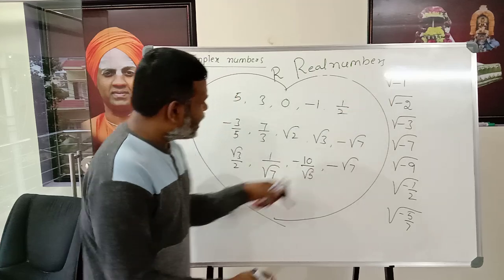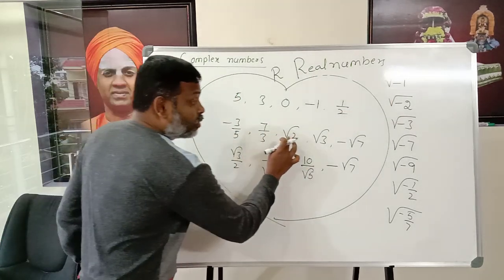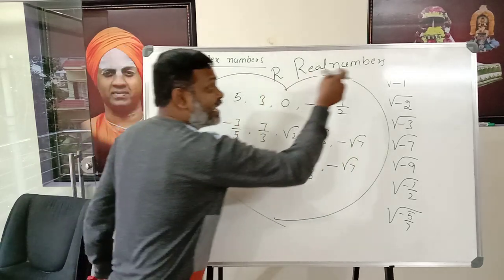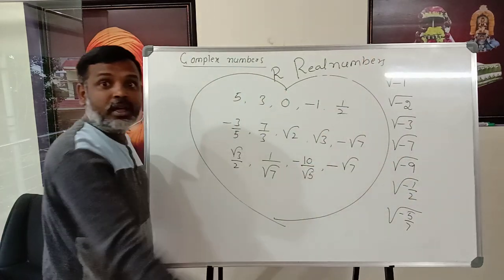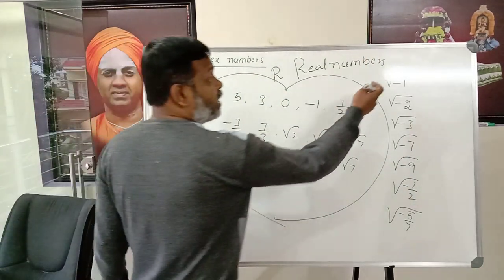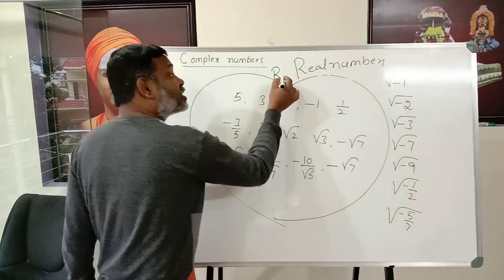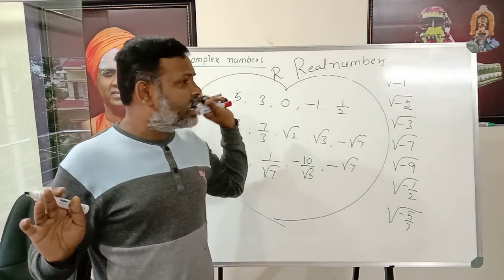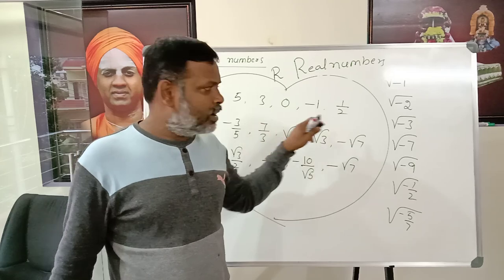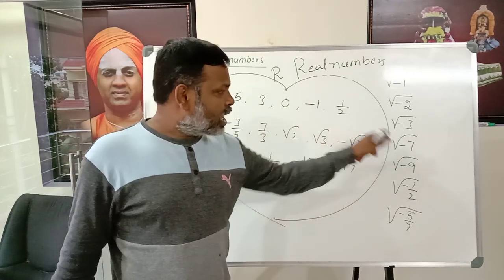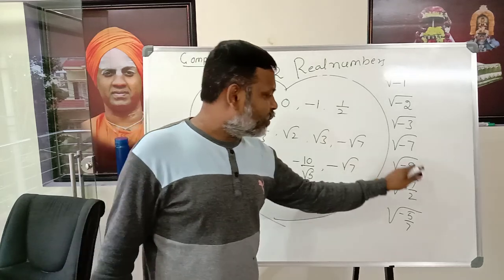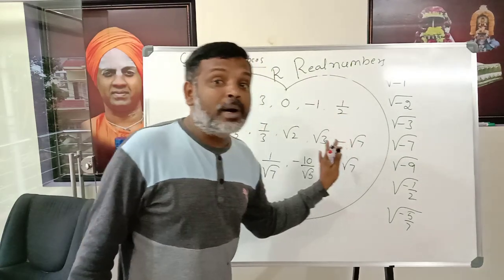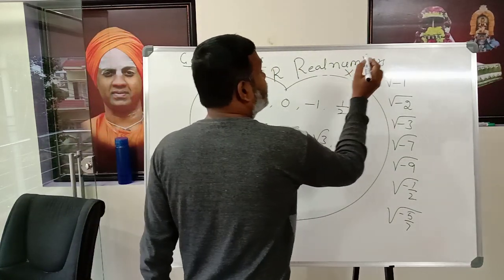√(−1) is a square root of a negative number. Therefore, square roots of negative numbers do not belong to the real number system. So √(−1) is not a real number, √(−2) is not a real number, √(−3) is not a real number — and similarly for √(−7), √(−9), √(−1/2), and √(−5/7): these are not real numbers.